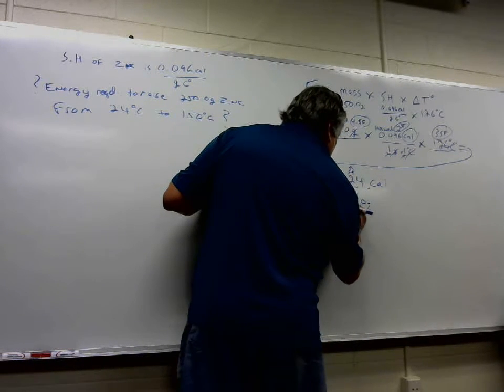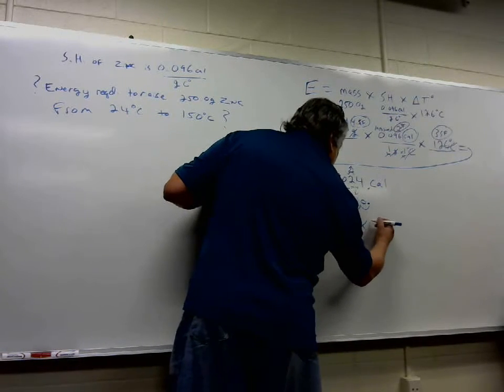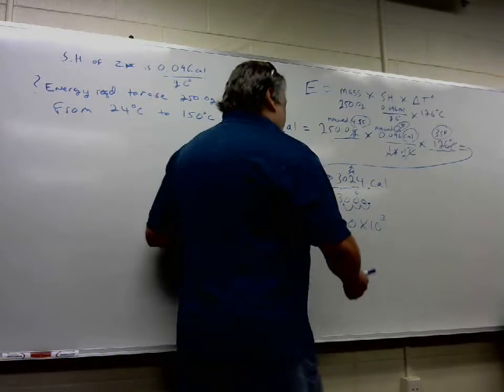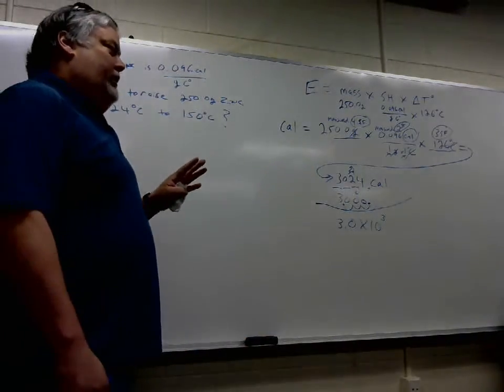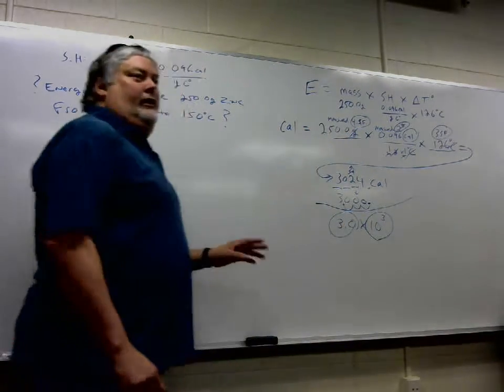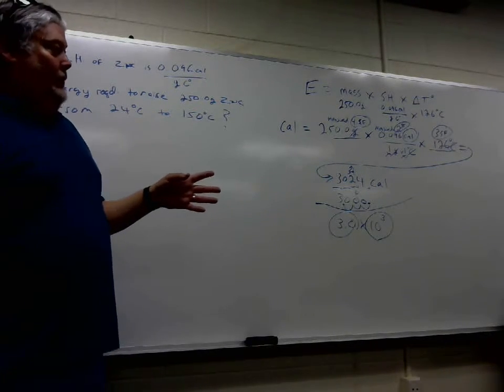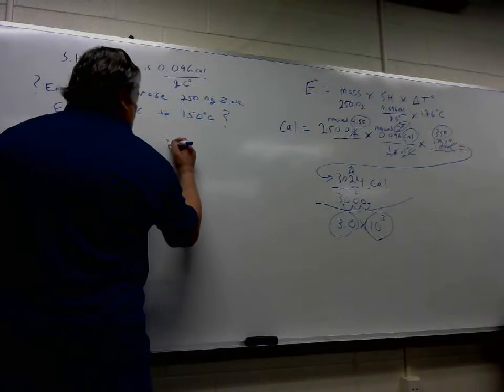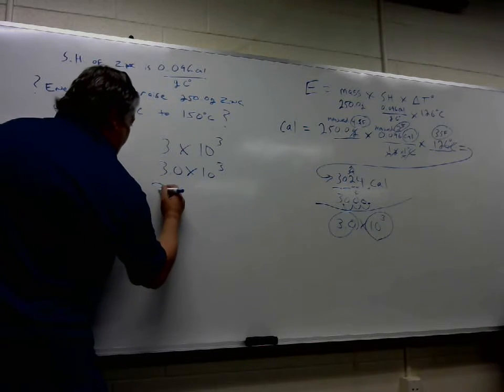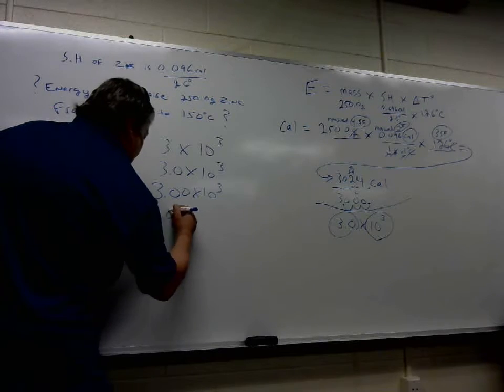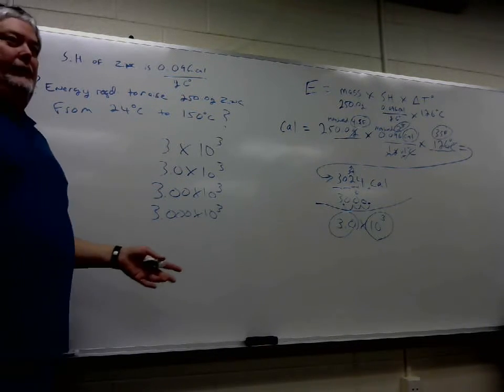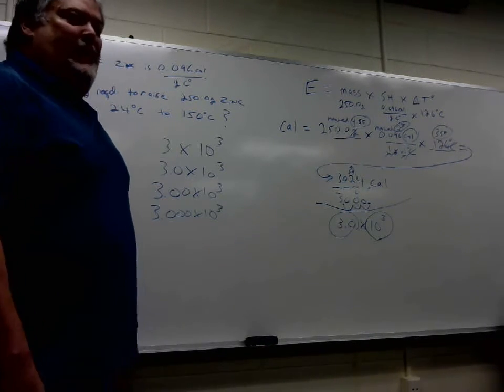So we take this 3,000, we come over, put our decimal there: 3.0 times 10 to the third. Because we came over three decimal spots, so that gives us our 10 to the positive third power, and then 3.0. Because we all know that when we're considering significant figures and we're in scientific notation, this part doesn't count. Only the coefficient counts towards totaling significant figures. So that's the good thing about scientific notation—it allows you to put an answer in the right number of significant figures. In a case like 3,000, there's no other way to do it.